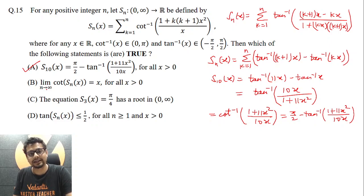It is a multiple choice, multiple correct type question. Let's explore option B. So here as you go for option B, limit n tending to infinity cot of S_n(x) equal to x for all x greater than 0. So let's explore.